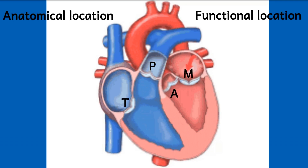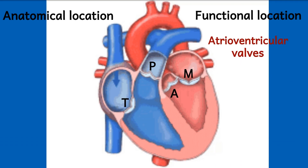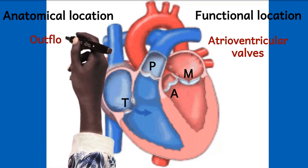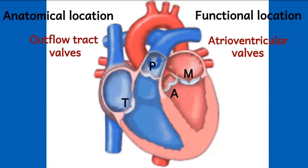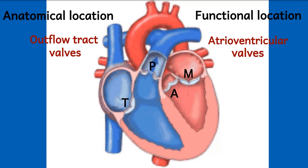When it comes to the functional location of the valves, the mitral valve and the tricuspid valve are called atrioventricular valves — they control the flow of blood from the atrium to the ventricles. The aortic valve and the pulmonary valve are the outflow tract valves, keeping blood moving in one direction through the major arteries. So anatomically, left-sided valves are mitral and aortic; right-sided are tricuspid and pulmonary.